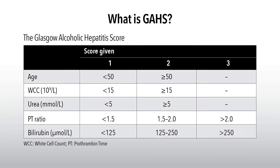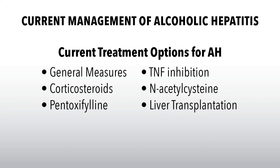The Glasgow alcoholic hepatitis score assigns 1, 2, and 3 points depending on age, white count, blood urea nitrogen, PT ratio, and bilirubin. This score has not been validated outside of Great Britain, but it appears to be a useful tool in assessing patients and predicting outcomes.